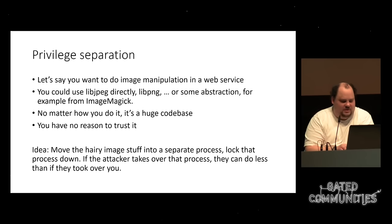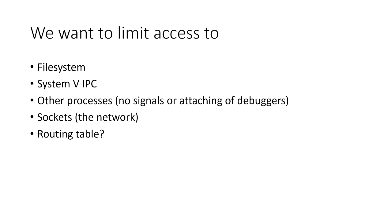The idea is to move all the image manipulation stuff into a separate process and lock that process down. By locking down we mean: file system access, System5 IPC, inter-process communications — make sure no new IPC channels can be opened, only the ones given to the process when created. Limit network access too, because if the attacker can't get a shell, it might try to create one on a network socket. Maybe there's a routing problem — the service is only supposed to be a microservice visible from one host in the DMZ, but it has a default route it doesn't need.